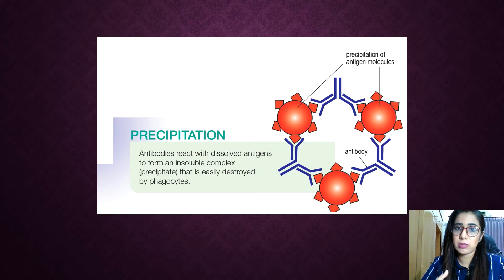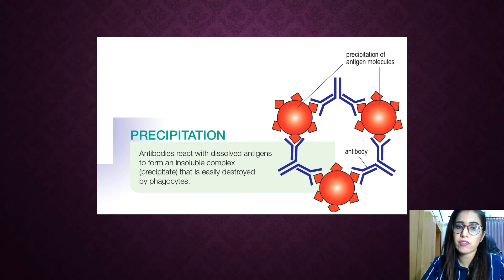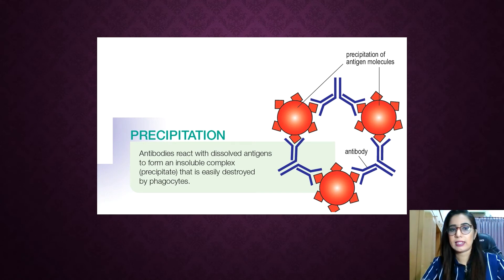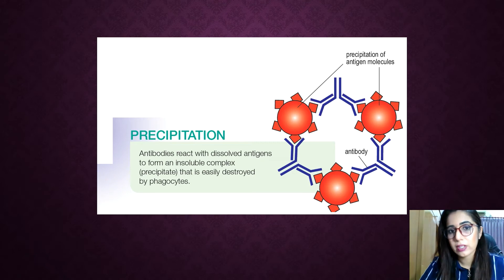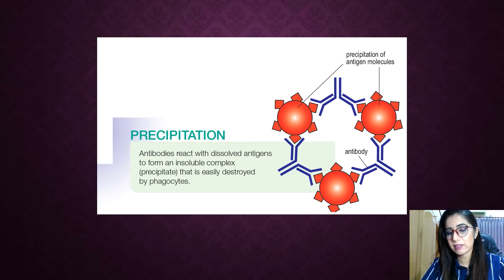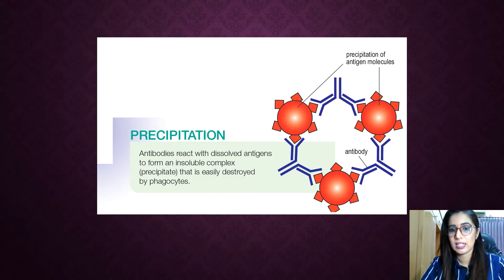Precipitation is when antibodies, also called precipitins, bind to dissolved antigens to form an insoluble antibody-antigen complex that precipitates. This antibody-antigen complex then facilitates phagocytosis by phagocytes, making it easier for phagocytosis to occur.